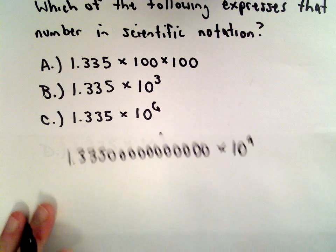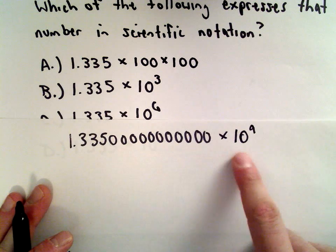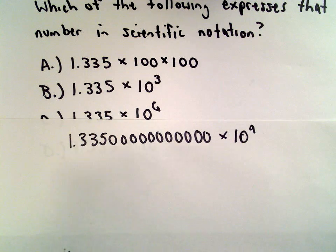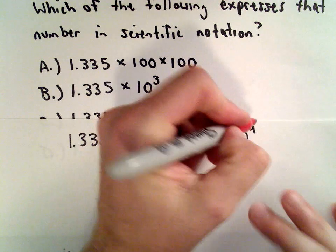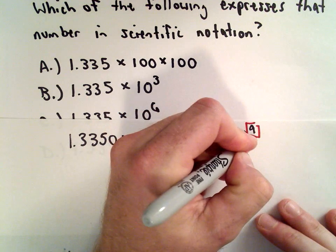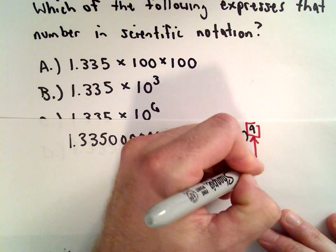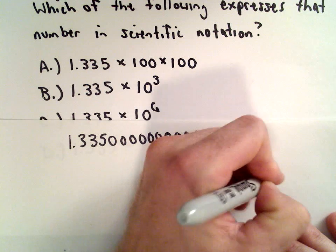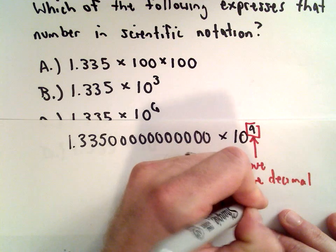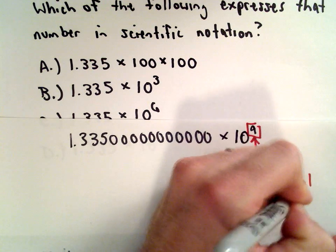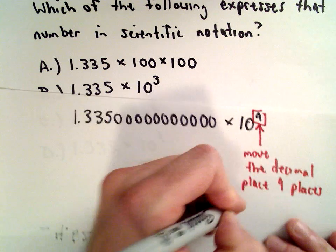So to convert 1.335 times 10 to the ninth, they said write that in standard notation. This exponent up here is positive 9, and what this tells me is: move the decimal place 9 places to the right.